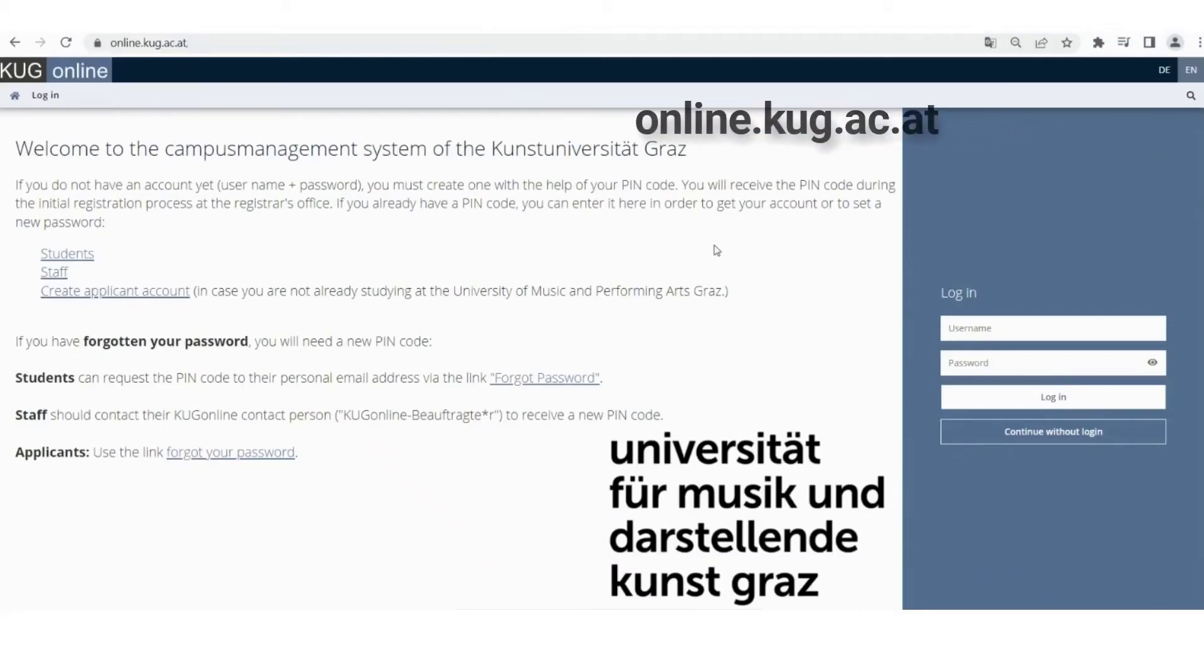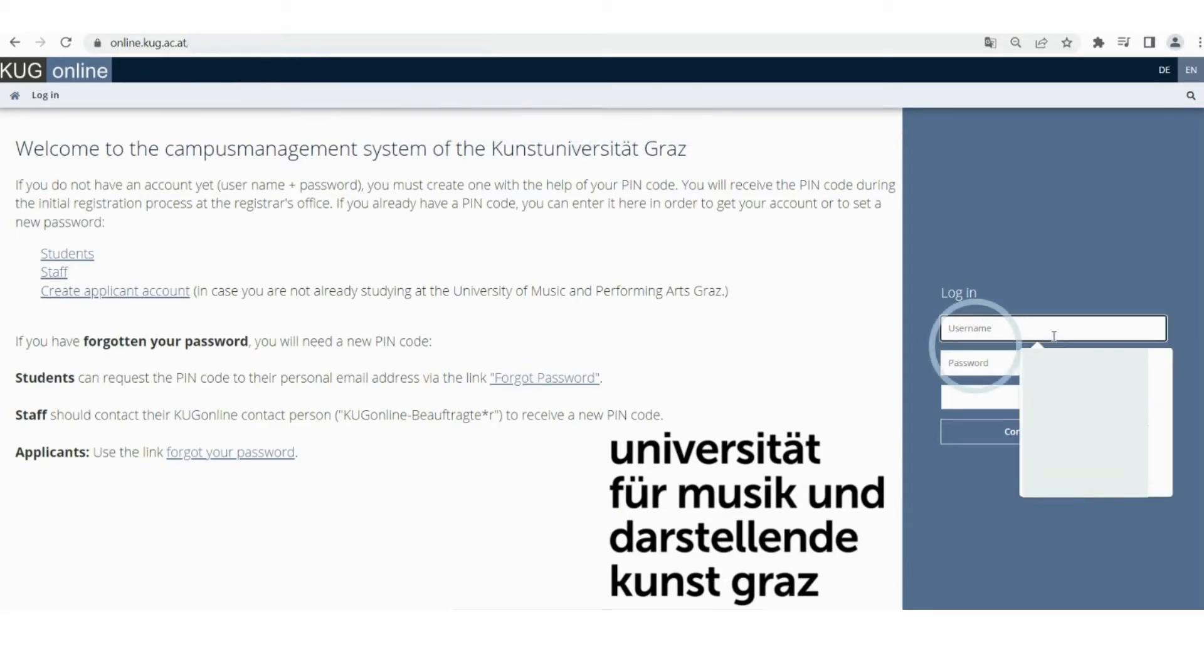In order to find the KUG Online system, type online.kug.ac.at in your browser. Your username is the letter S plus your student registration number, which you can also find on your KUG card.